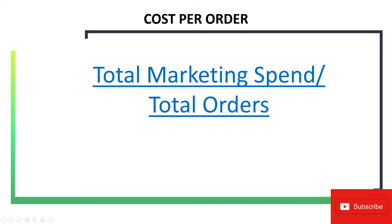Calculating cost per order is one of the e-commerce metrics that a lot of e-commerce websites use to monitor performance on how effective your advertising is to generating orders. The formula is one of the more basic formulas: it is total marketing spend divided by total orders. The cost per order metric involves the total cost in advertising that went into generating a single purchase or order.